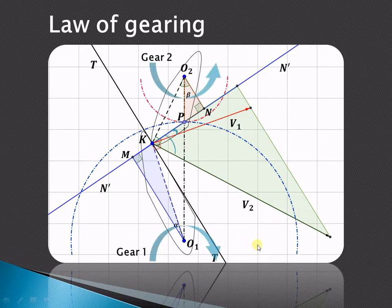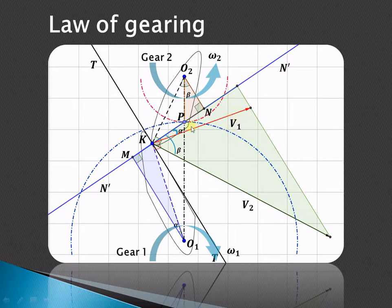Omega 1 and omega 2 are the angular velocities with which the gears are rotating. Since the angle at O1 is alpha, the velocity V1 makes an angle of alpha with the common normal. Similarly, velocity V2 makes an angle beta with the common normal.